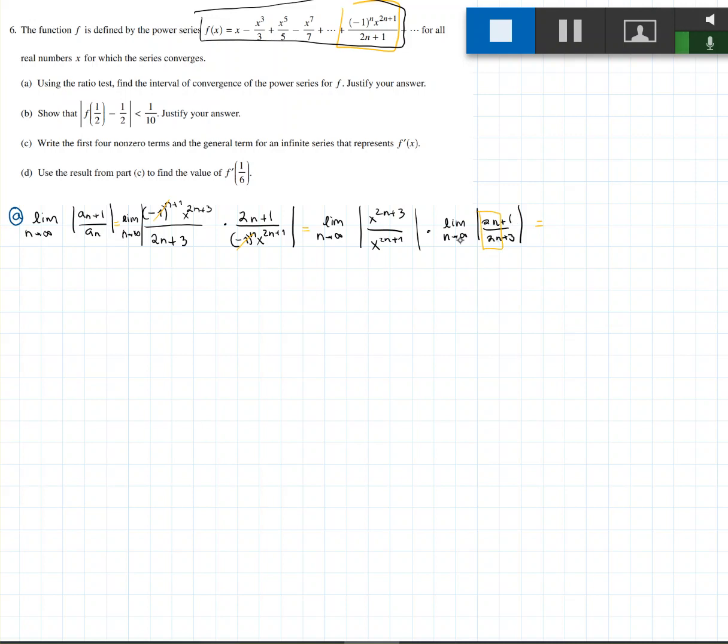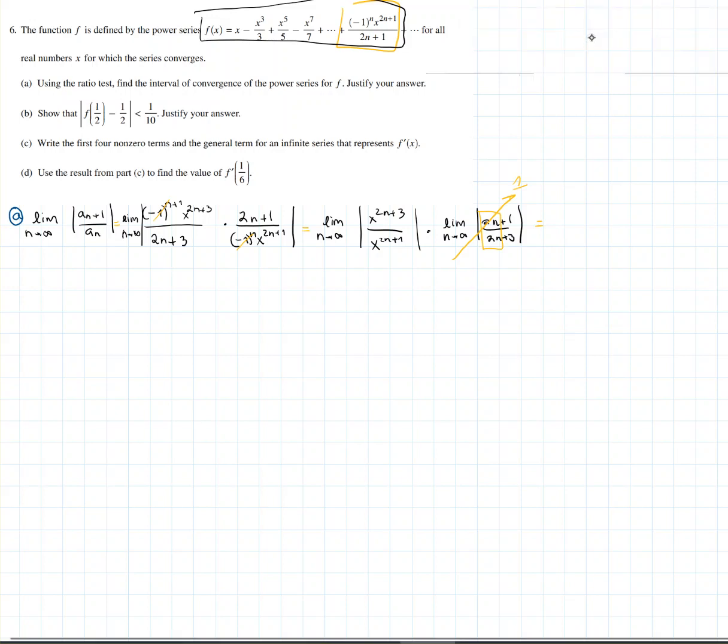So 2n over 2n is 1, which means that this whole thing, this whole limit approaches 1, which means we are only left remaining with 2n+3 over x^{2n+1}. And when you simplify that, we get that the limit goes to infinity of x^{2n+3} over 2n-1. So we subtract each term from the other and we just end up getting the absolute value of x squared in the interval of convergence of 1.